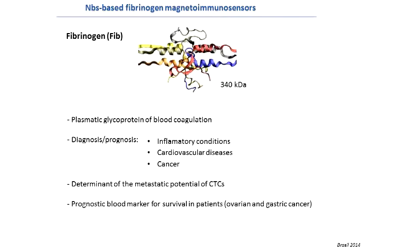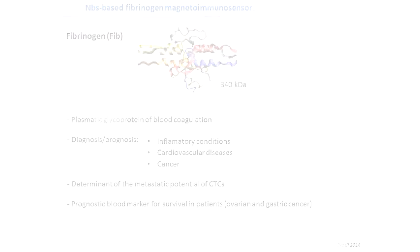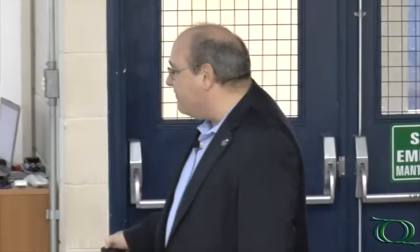It is also a determinant of the metastatic potential of circulating tumor cells, and has been considered as a prognostic blood marker for survival in patients suffering from ovarian and gastric cancers — making it a molecule of very high clinical interest.